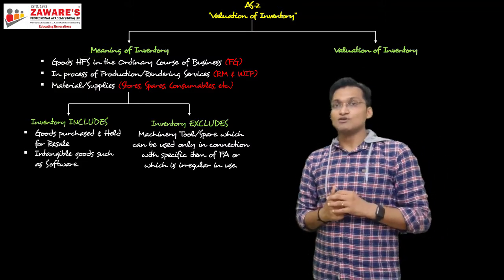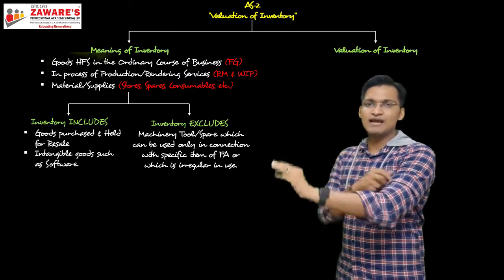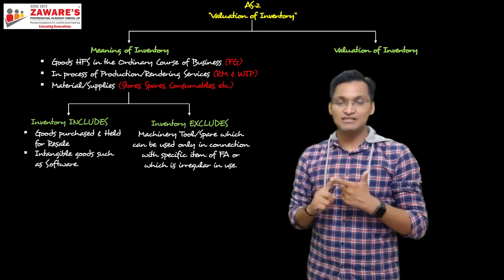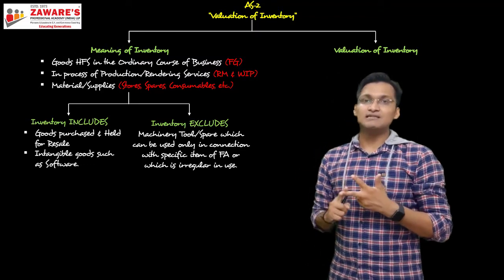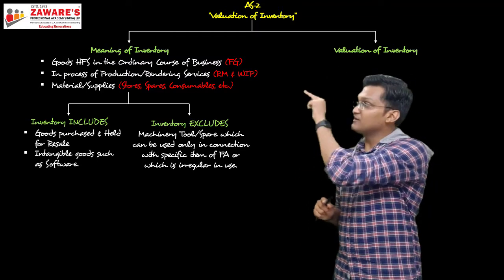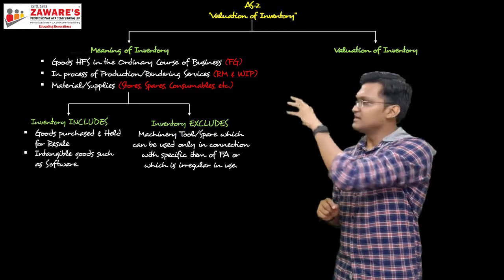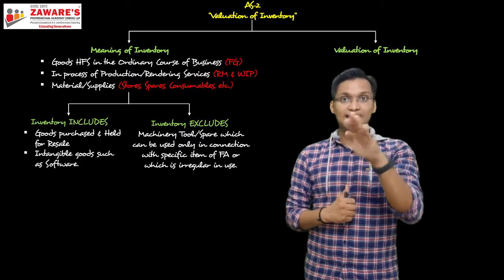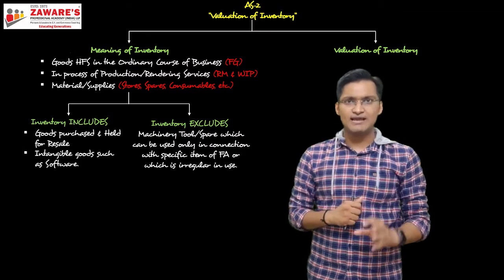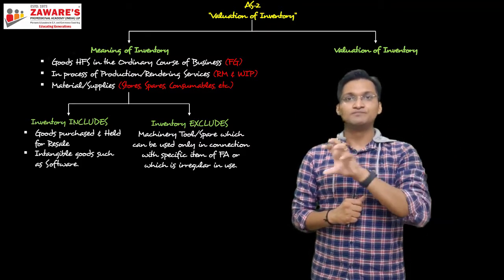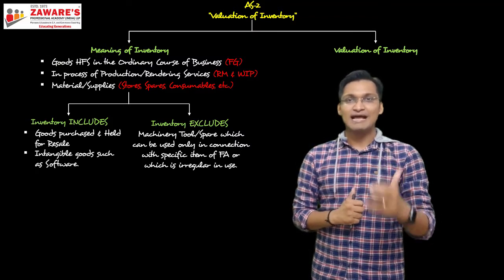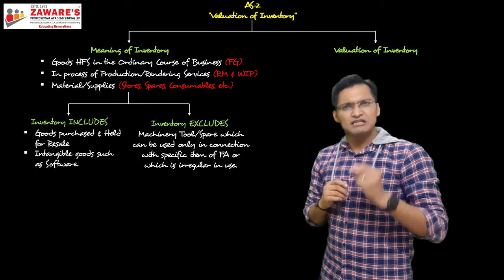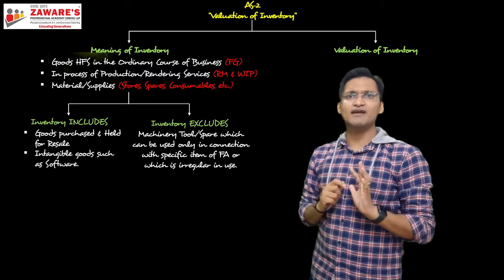So inventory means and includes three things: goods held for sale in the ordinary course of business; goods in the process of production or rendering services; and materials and supplies. Inventory includes two specific express inclusions and excludes one specific thing. I hope this first branch is clear. The same approach should be applied to every standard — divide each standard into branches and create a chart, which makes revision very easy.